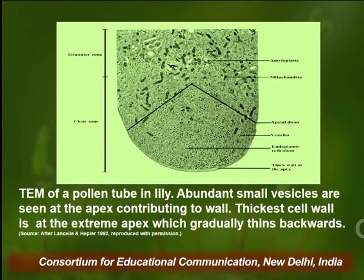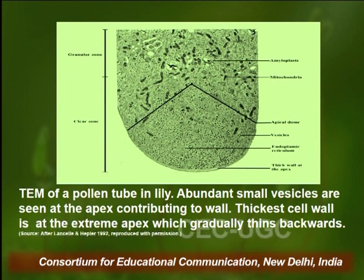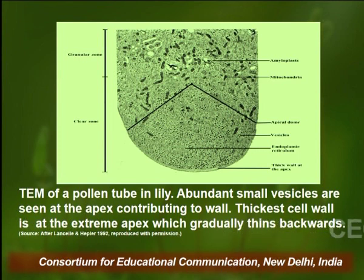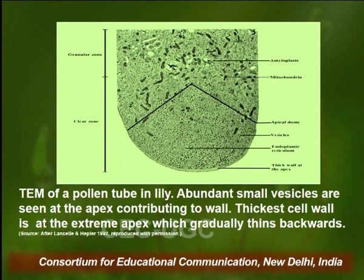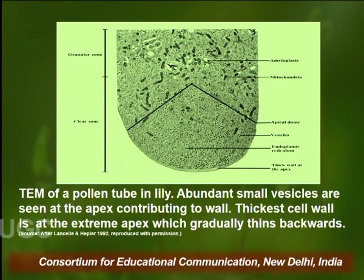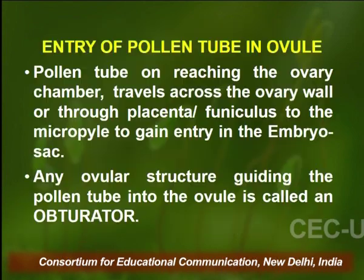This is a transmission electron micrograph of a pollen tube in lily. You can see abundant small vesicles present at the apex of the tube. The thickest cell wall is at the extreme apex and gradually thins backwards. These vesicles give extensibility to the pollen tube.